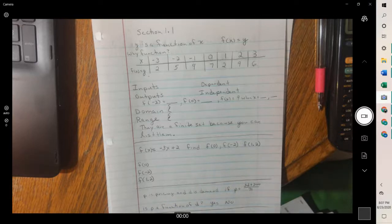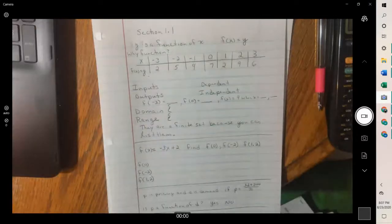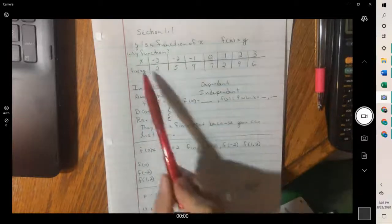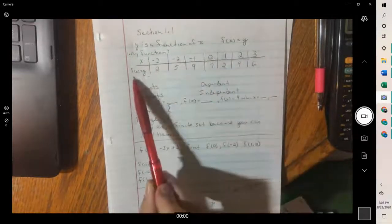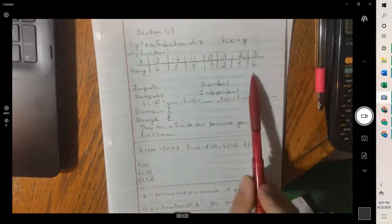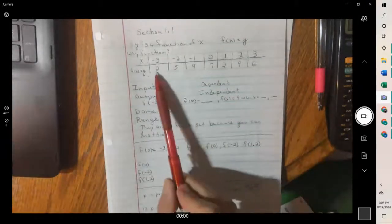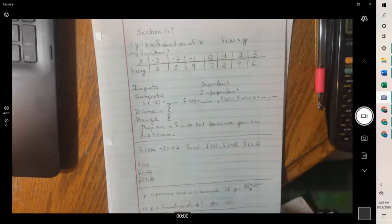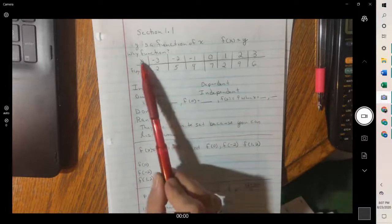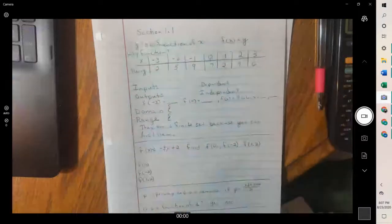To know if it's a function, if we look at these set up here, the x values are on top, then f of x or the y values are on the bottom. As long as the x values do not repeat, then it's a function. The y values can repeat. Notice we have two nines and two twos, and that's fine. But x needs to not repeat.